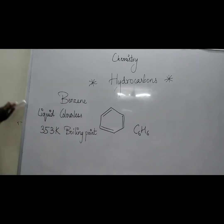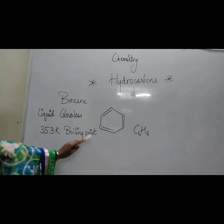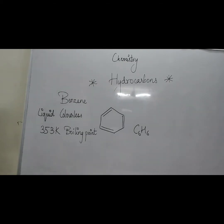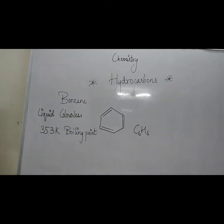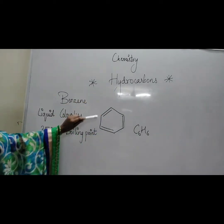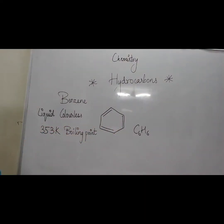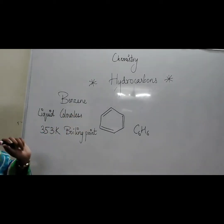Benzene is basically a colorless liquid. Its boiling point is 353 Kelvin. Its molecular formula is C6H6. This is its structural formula — the pointed ones show the number of carbons and hydrogens. Benzene basically has alternating single and double bonds.